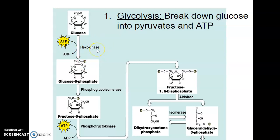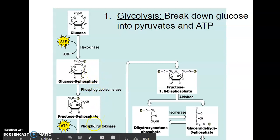Hexokinase — the '-ase' means it's an enzyme, and more specifically a kinase. Anytime you see 'k-i-n-a-s-e,' that means its function is to add a phosphate group to the substrate, meaning it's a phosphorylating enzyme. Then glucose-6-phosphate isomerizes into fructose-6-phosphate. An isomer has the same molecular formula but a different structural formula. Glucose-6-phosphate and fructose-6-phosphate have the same molecular formula but different structural formulas.